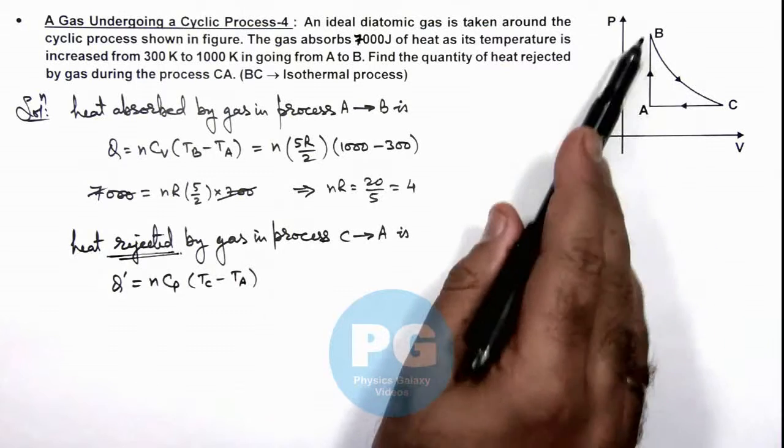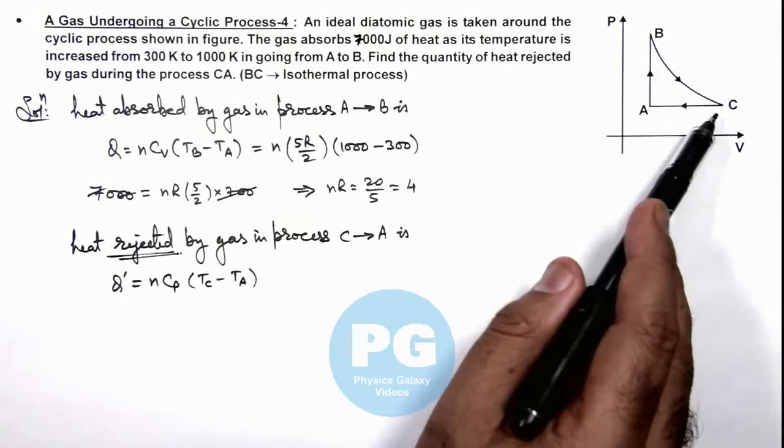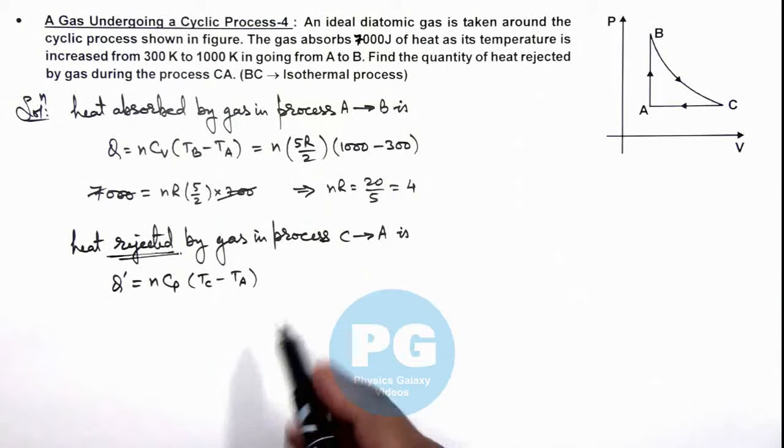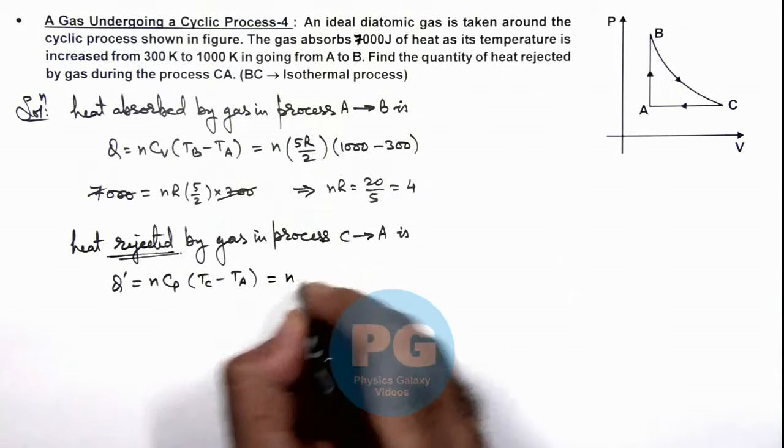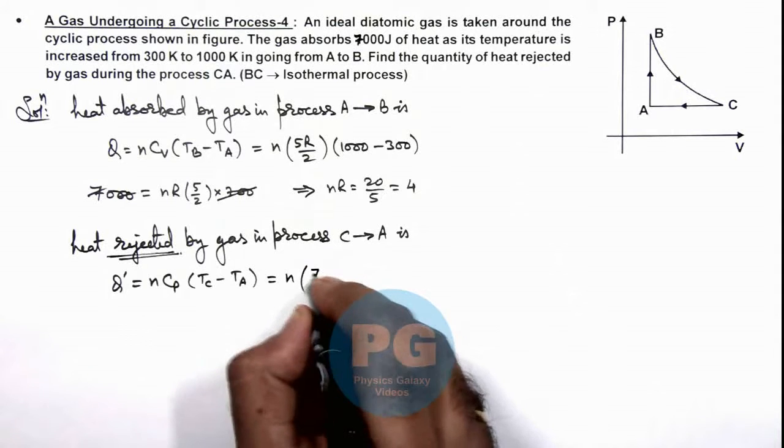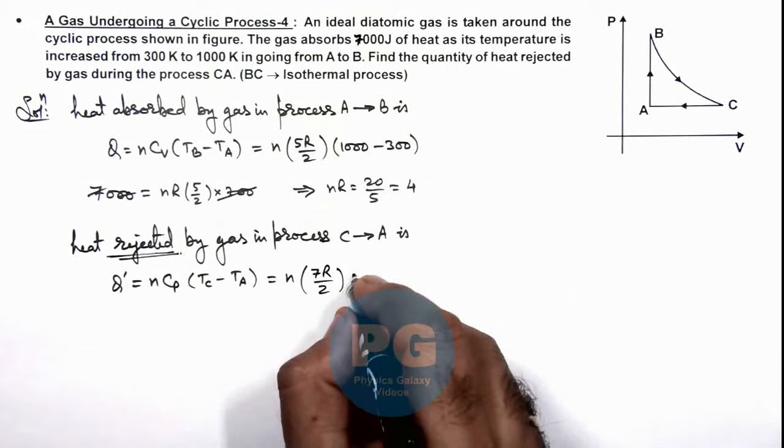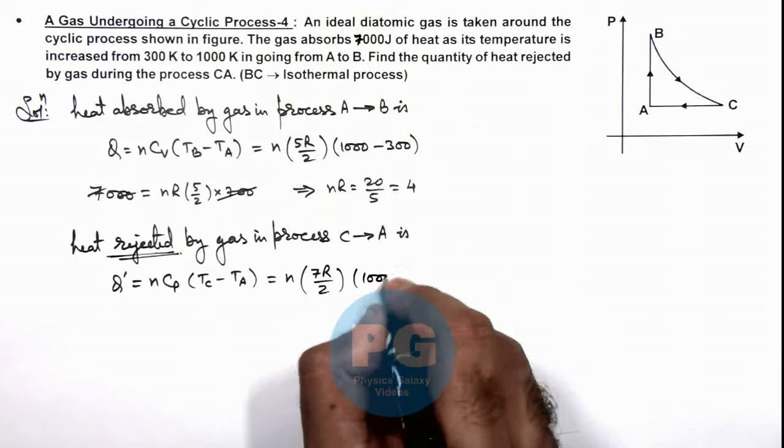And as B to C is an isothermal process, C temperature will be equal to that of B, which is 1000 kelvin. So this can be written as n, and C_p for a diatomic gas is 7R/2, multiplied by 1000 minus 300.